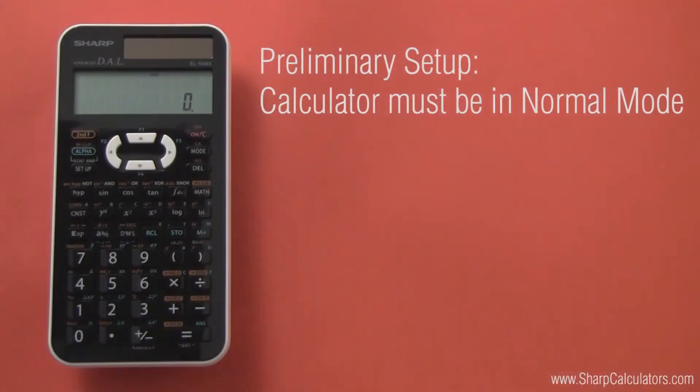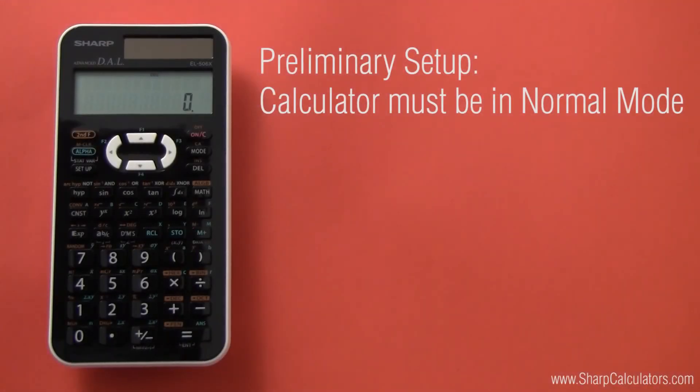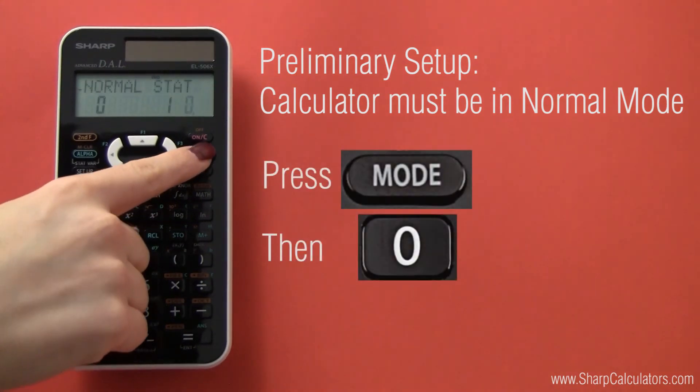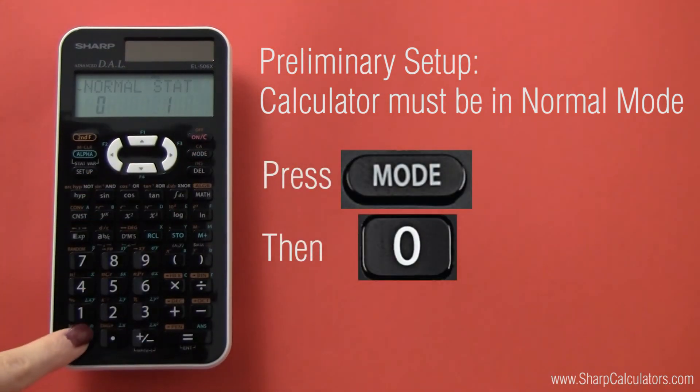To calculate roots, your calculator needs to be in normal mode. To put your calculator in normal mode, press Mode, then 0.